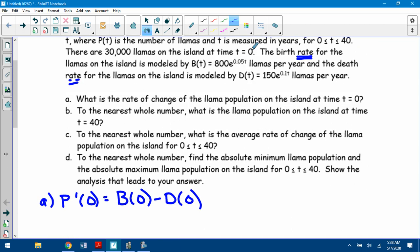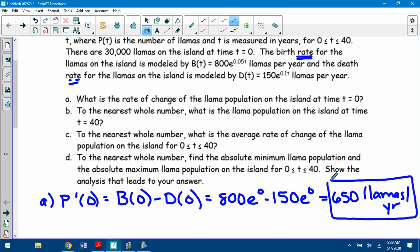So all we need to do here is we need to do 800 e to the 0 minus 150 e to the 0. Obviously, e to the 0 is 1, so this is going to just get us to 650. It didn't say to use units or anything like that. The AP will take off if you do wrong units. They don't ask for it. So it should be llamas per year because it's a rate, but if you just said 650, that's the safest. Don't give them more than they ask for.